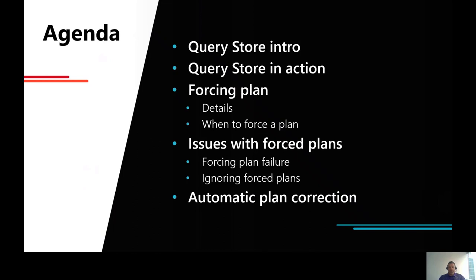Here is our agenda for today. Since this is a 300-level session, I will just briefly introduce Query Store at the beginning — how it works, its architecture, and what we can achieve with it. You will then see Query Store in action, how it helps us to identify and fix plan regression during SQL Server upgrades. I will explain what exactly happens when a plan is forced, when forcing a plan is a good idea and when not. Plan forcing does not always work — a forced plan can fail and SQL Server can ignore it. Finally, you will see what happens when you let Query Store perform an automatic plan correction for you.